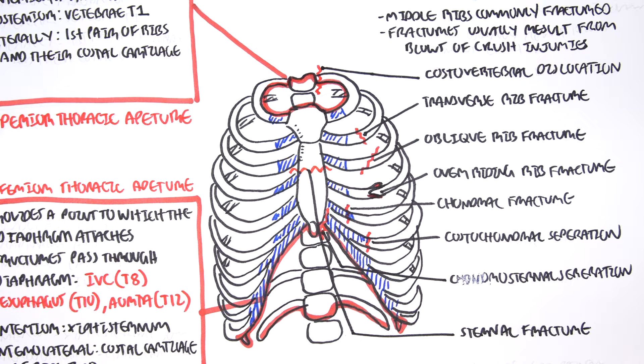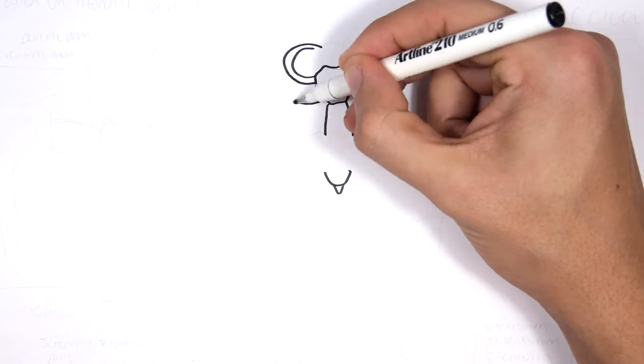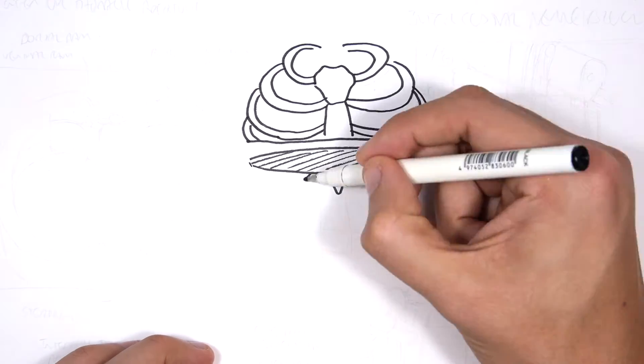So those were some types of thoracic cage injuries. Now let us look a bit more about what are some arteries, nerves and veins that go through here and supply the ribs, essentially.